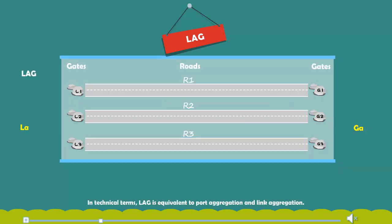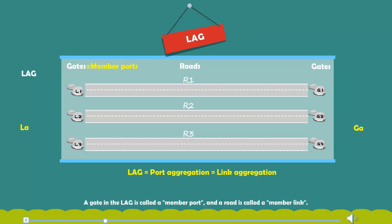In technical terms, LAG is equivalent to port aggregation and link aggregation. A gate in the LAG is called the member port, and a road is called the member link.